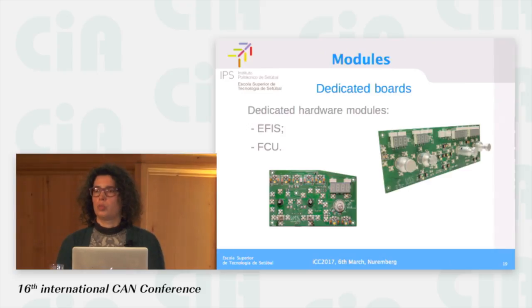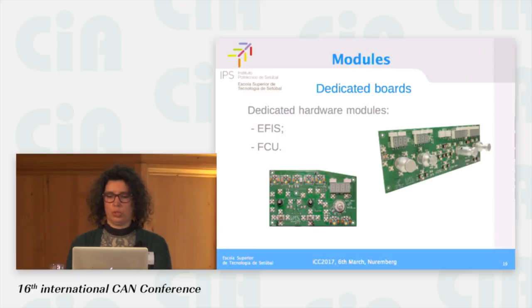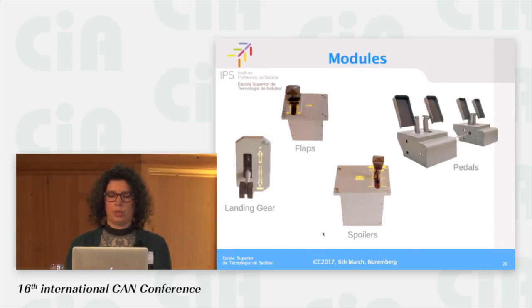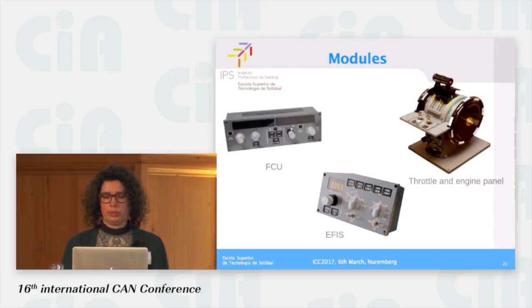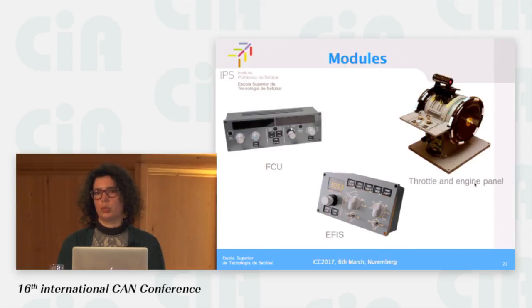For the more complex modules, we developed dedicated hardware. One is for the FCU and another for the AFIS. These are the final versions of the modules with their casings: the landing gear, flaps, pedals, spoilers, FCU, AFIS, throttle, and engine panels — which are the modules developed so far.